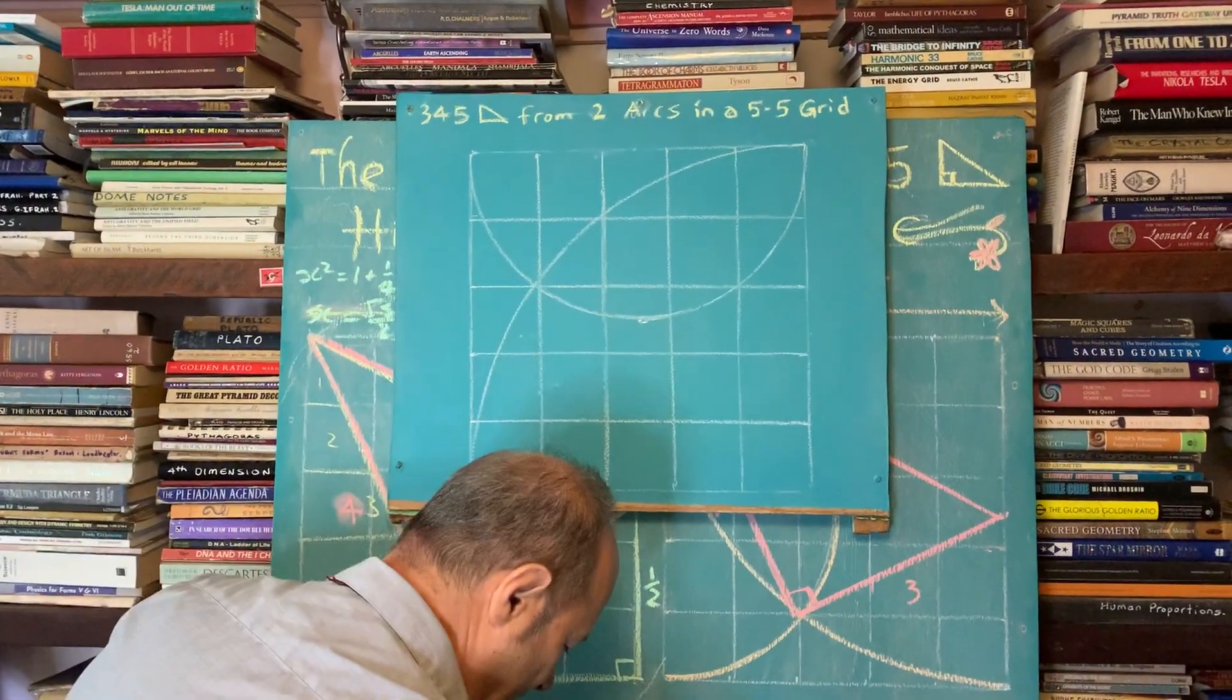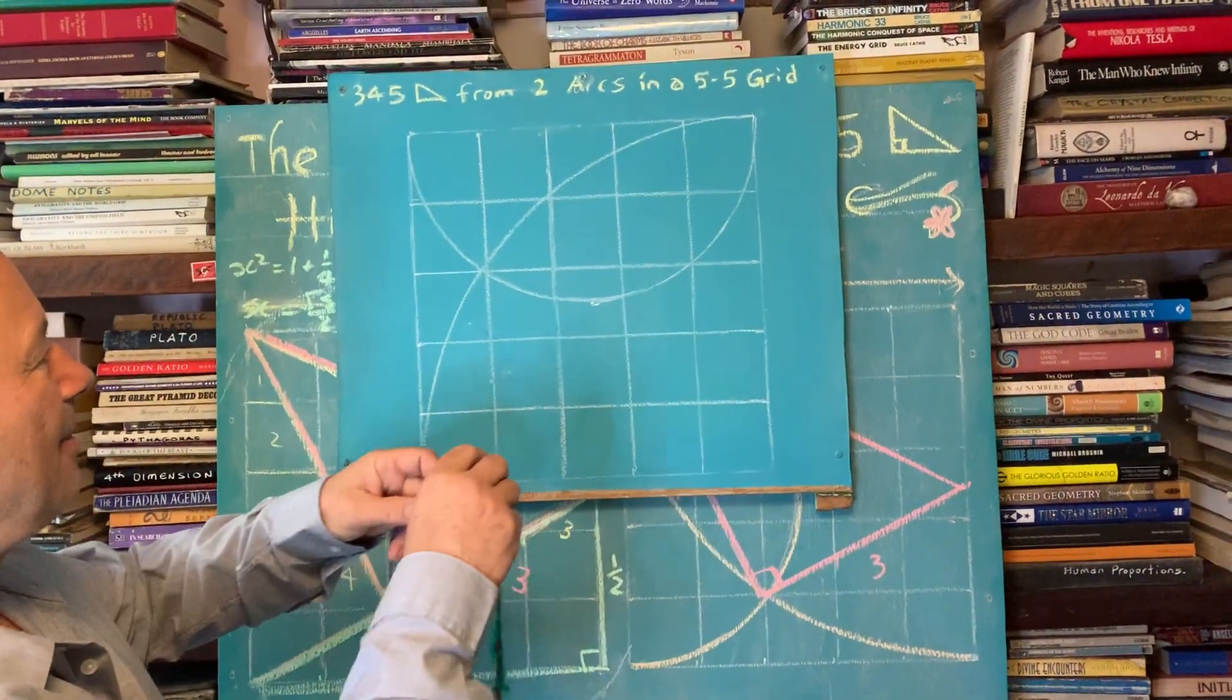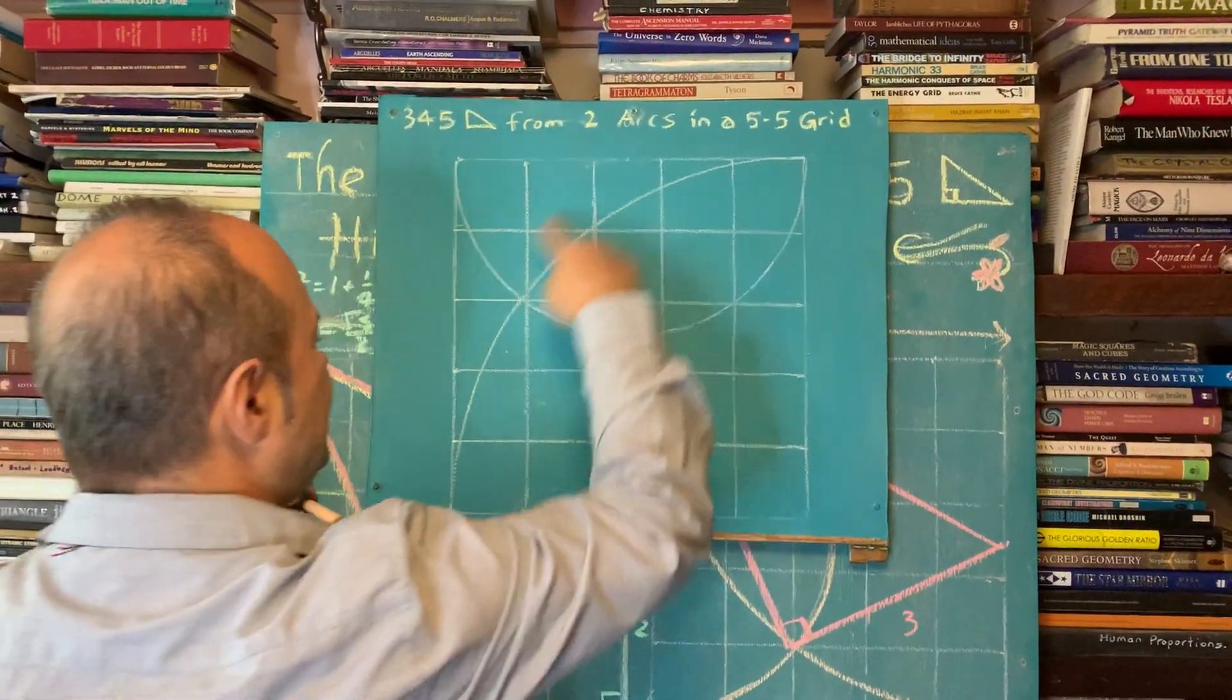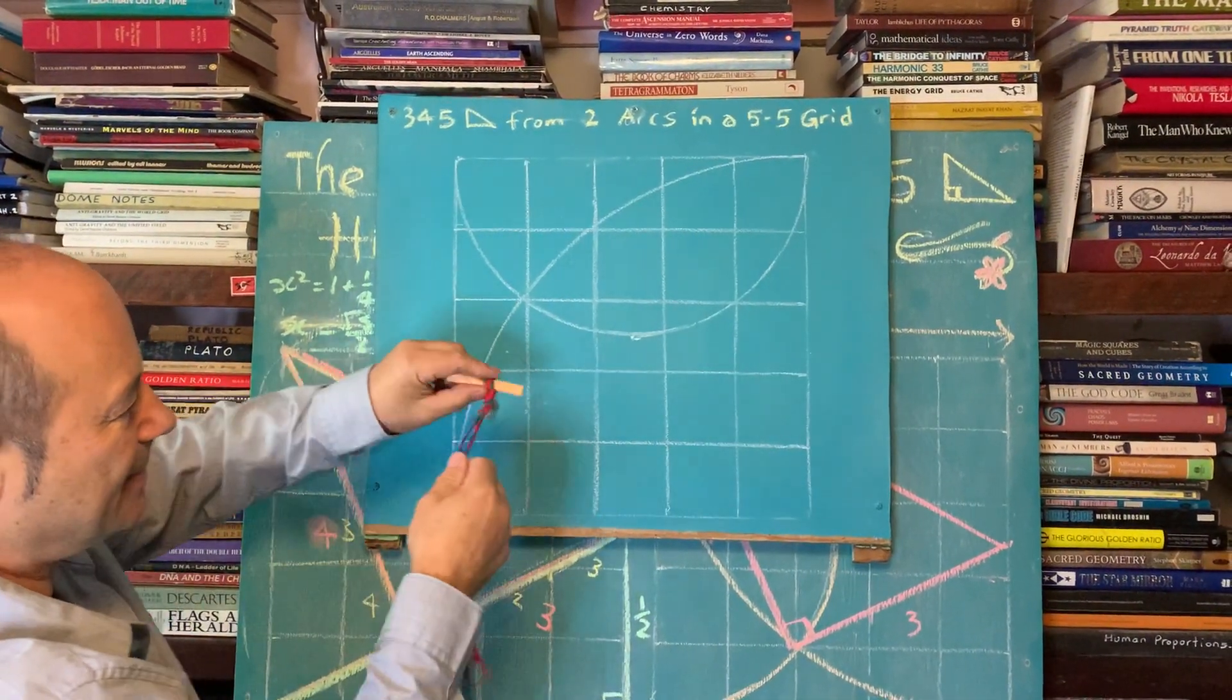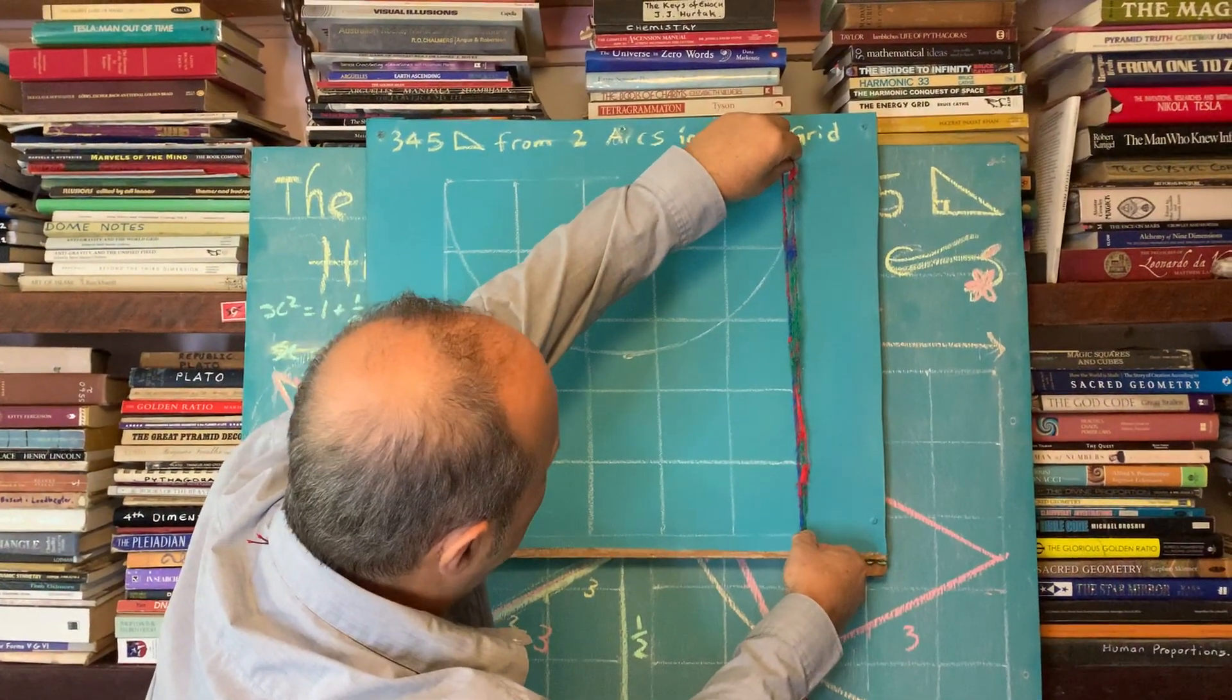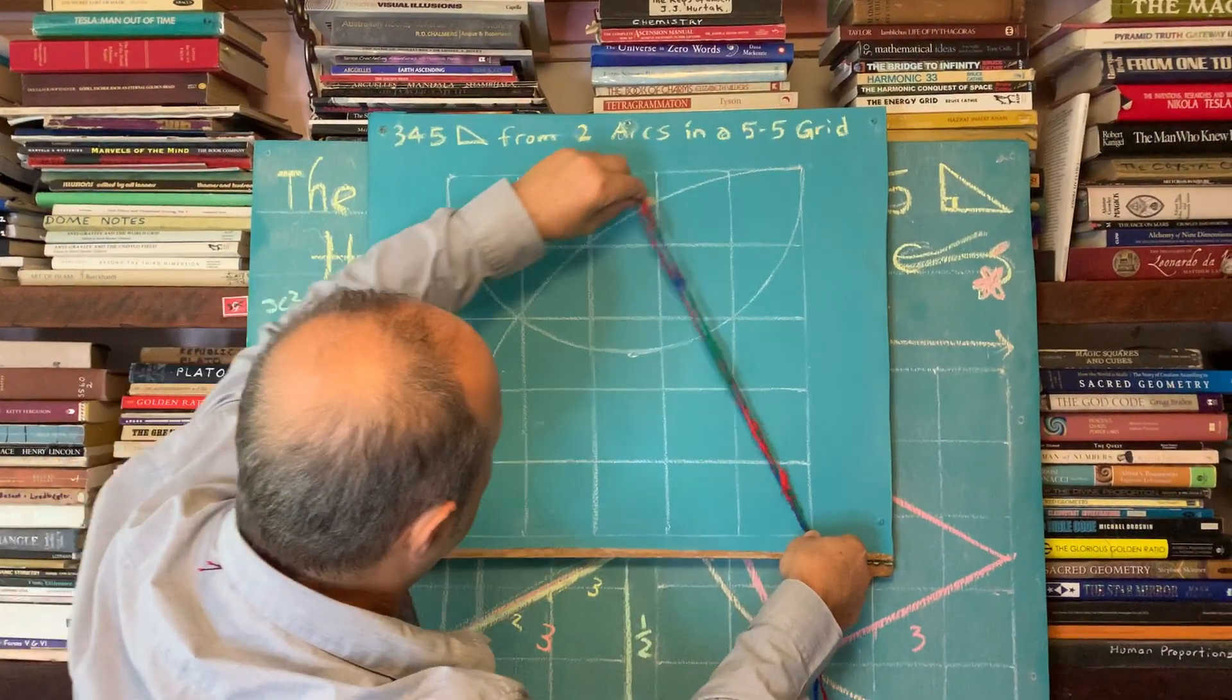I'm going to do the two arcs again, so I need to get my string again. I'll do it in orange. I'm going to draw this quarter circle here from here to there. The distance is five. I put my finger about here so I've got the tension right. Just check it, just check the tension.